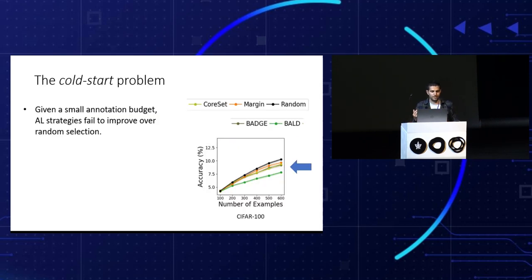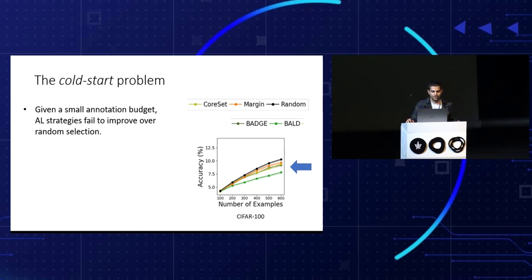Now we'll talk about a problem in active learning called the cold start problem. Given a small annotation budget, active learning strategies don't improve over random selection — they only work when the initial labeled set is very large. Here you see an active learning experiment on CIFAR-100. The x-axis shows the number of examples and the y-axis shows test accuracy. The initial set is selected randomly, then we follow five active learning iterations querying 100 samples more, using different strategies like margin, core set, etc.